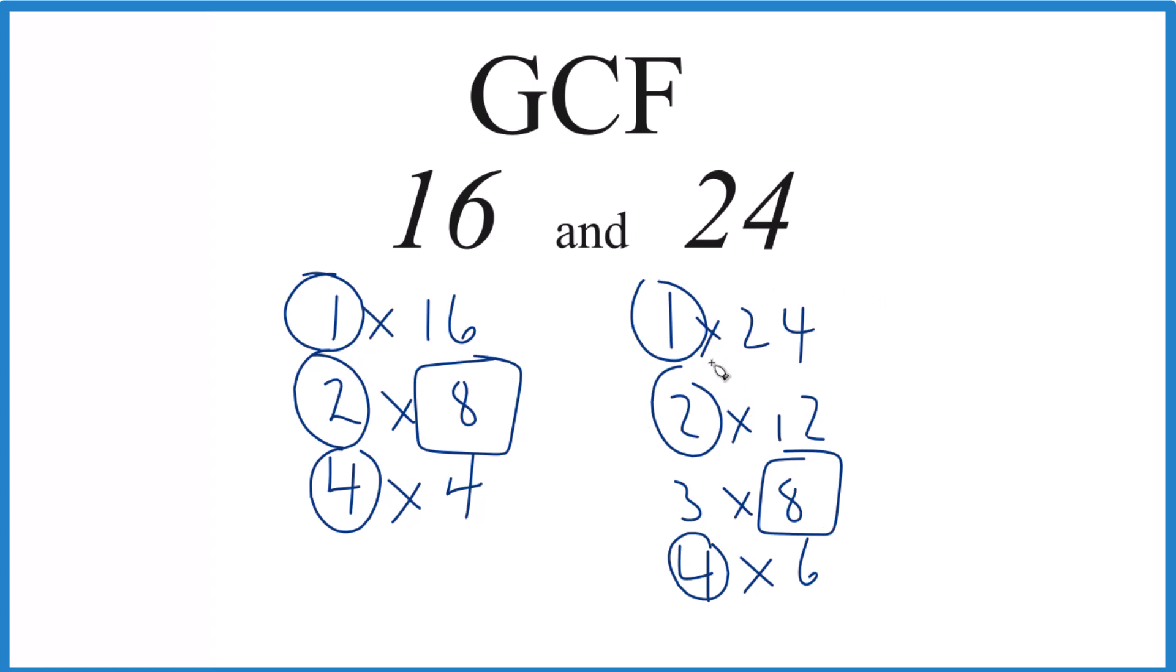So in answer to our question, the GCF for 16 and 24 is 8. There are other ways to do this, but with numbers like 16 and 24, this is probably the easiest. This is Dr. B. Thanks for watching.